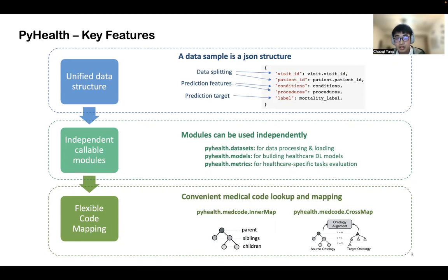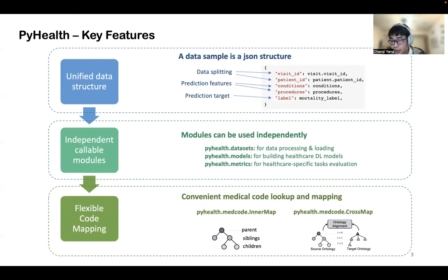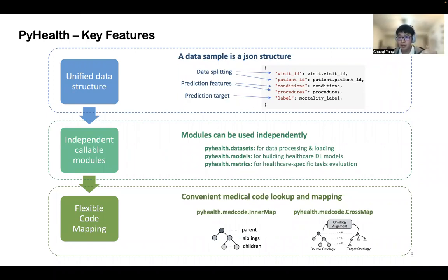The third key feature of our package is flexible code mapping. We provide two large modules: InternalMap and CrossMap. For InternalMap, we can retrieve the parent node, sibling node, and children node for a specific code, and also list all different descriptions for that medical code. For CrossMap, we have preloaded several medical coding mappings from one system to another. You simply specify the source coding ontology system and target ontology system and provide the code you want to map. We can map it using our dictionary mapping.